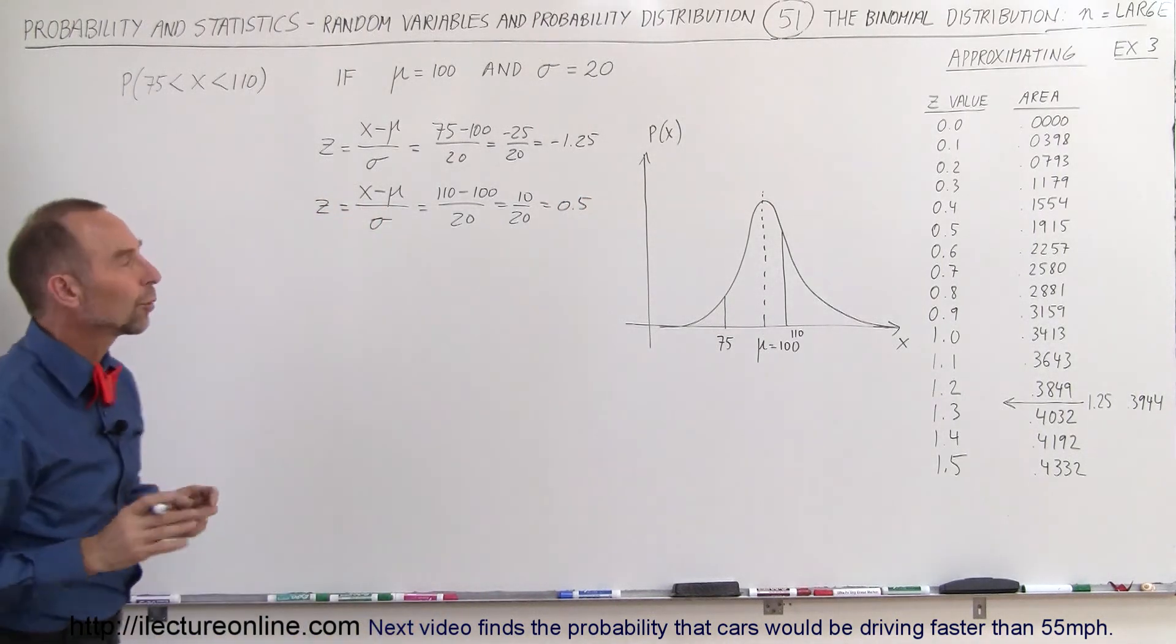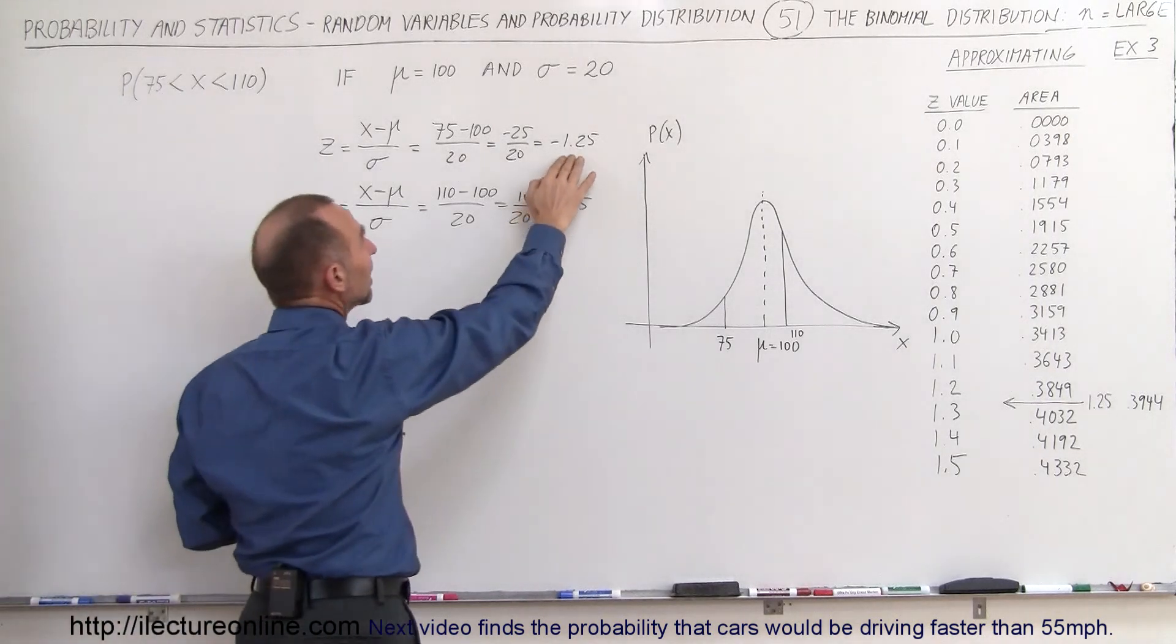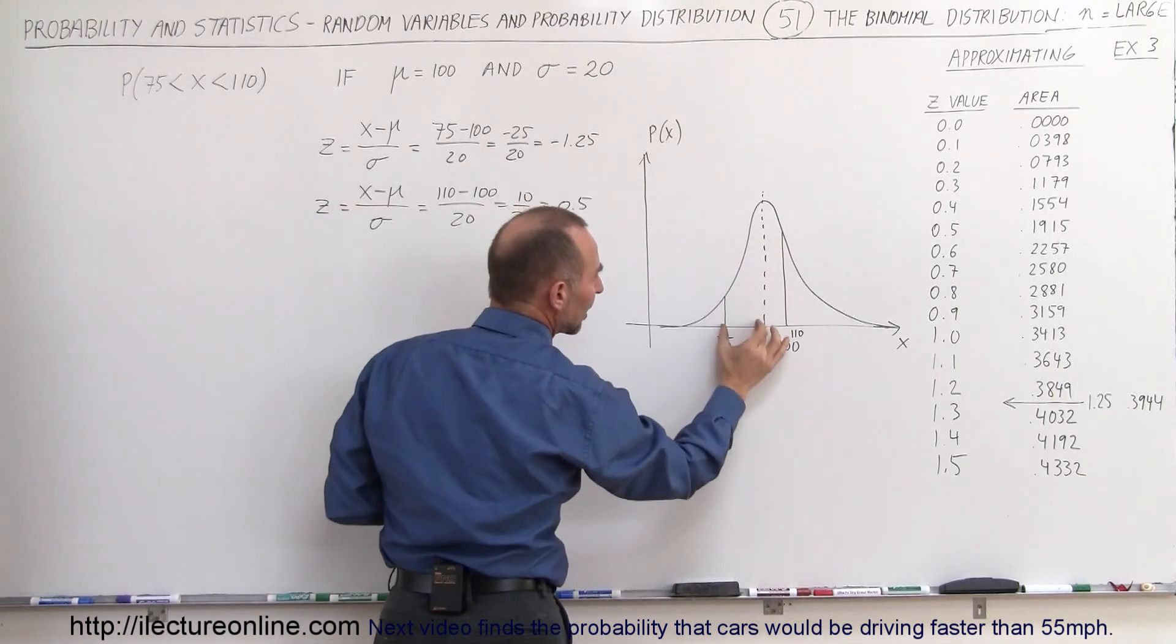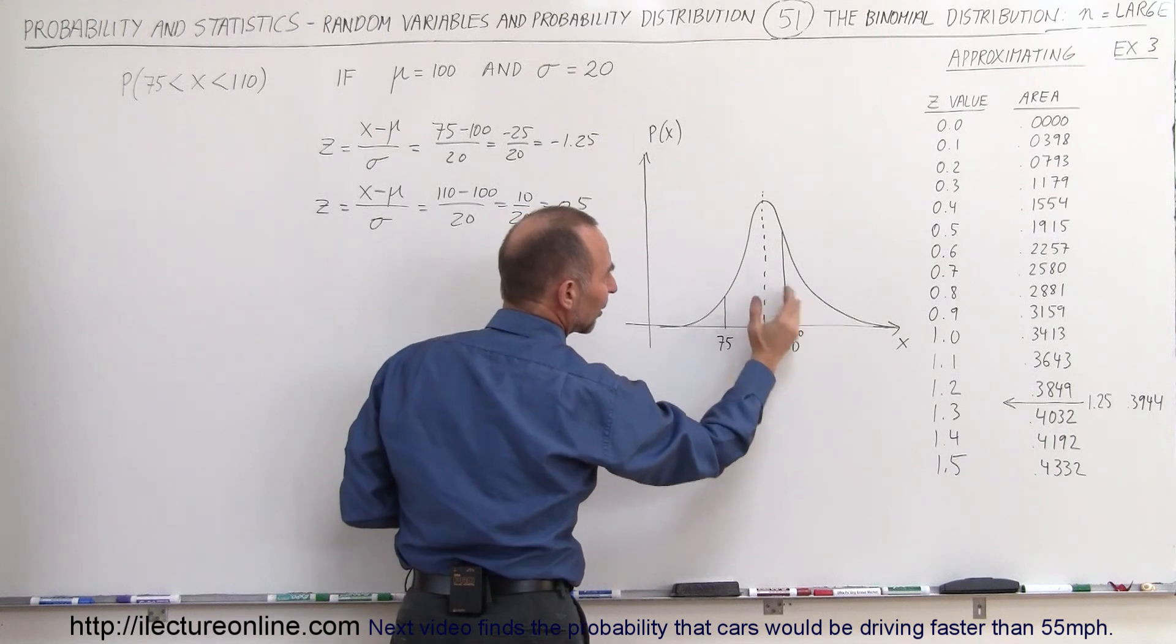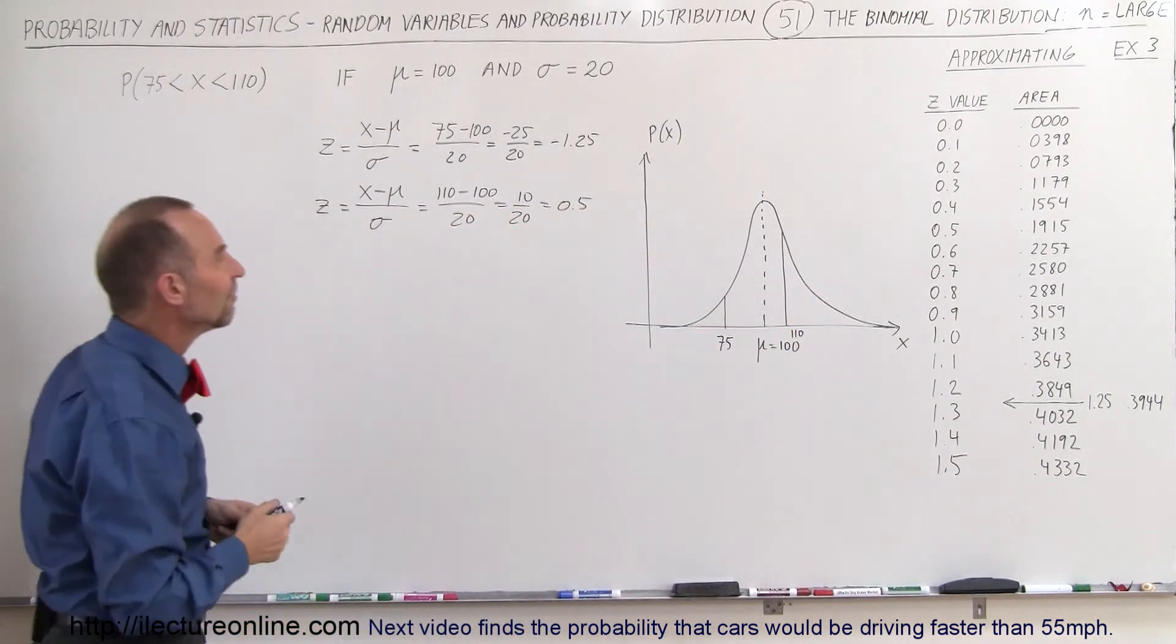So what we're going to do is we're going to find the areas corresponding to those z values. The fact that this is negative doesn't really matter because this area right here would be the same as the positive area on the other side, if it was plus 1.25 for the z value.